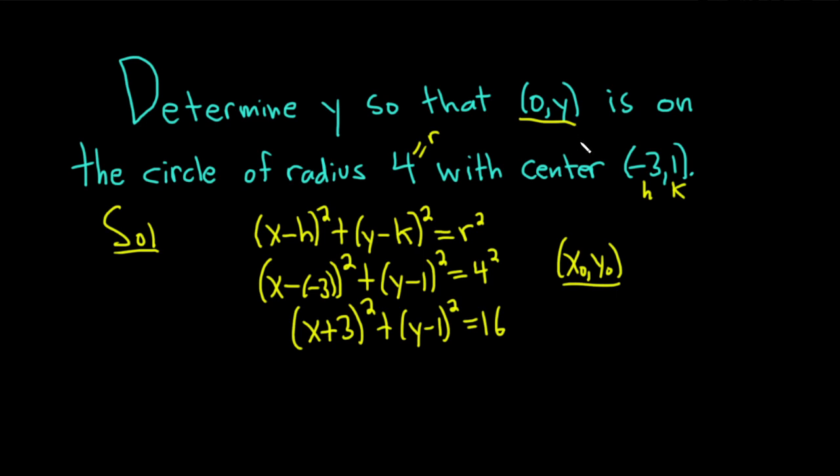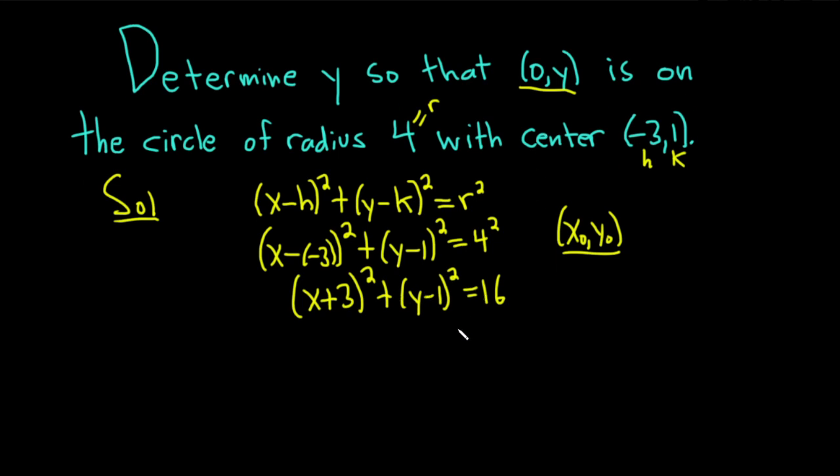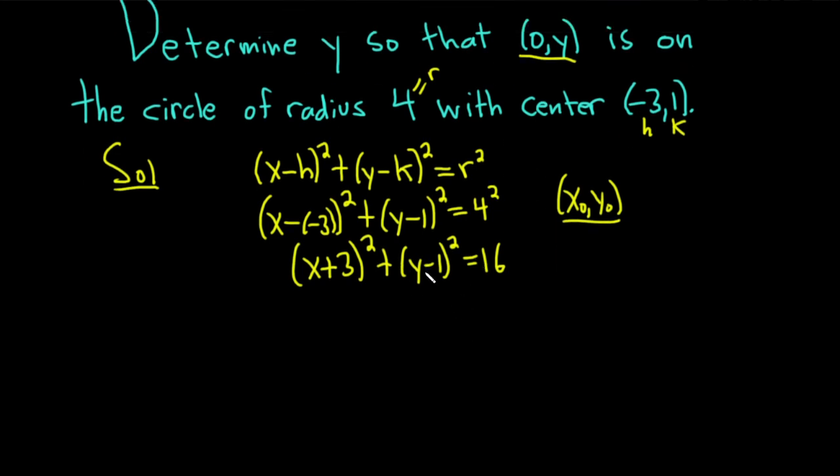We have (0, y) and we want it to be on the circle, so we're going to plug it into this equation. There's already a y variable there, so it's a little strange, but let's go ahead. We'll plug in x = 0 and keep y the same: (0 + 3)² + (y - 1)² = 16.